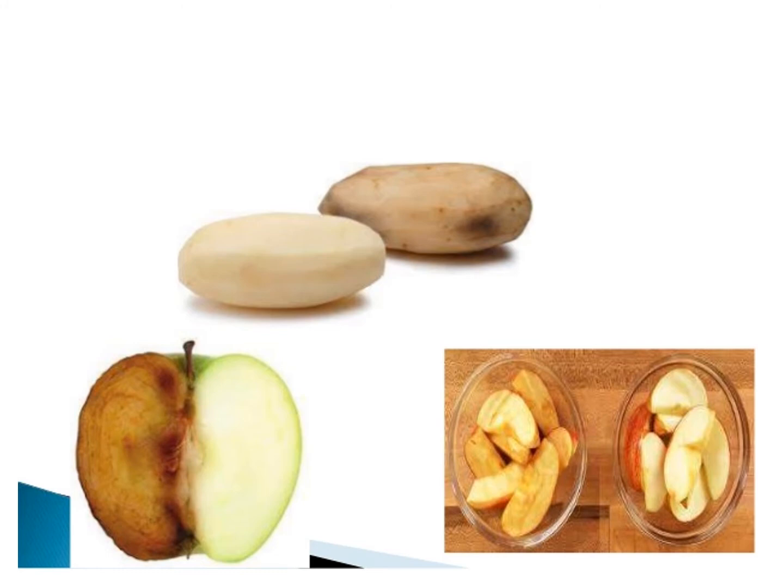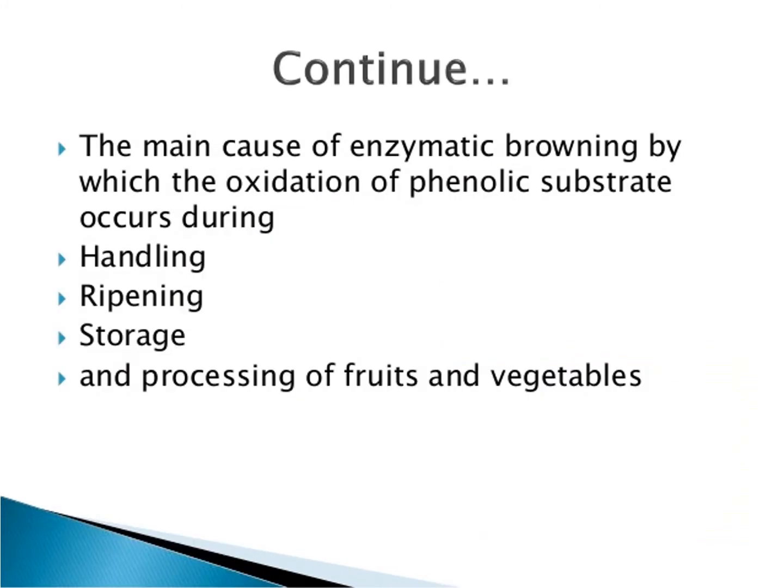Here are some pictures showing the browning reaction in fruits and vegetables. Apple and banana, and in vegetables, brinjal and potato show these browning reactions. The main cause of enzymatic browning is the oxidation of phenolic substances, which occurs during the handling, ripening, storage, and processing of fruits and vegetables.